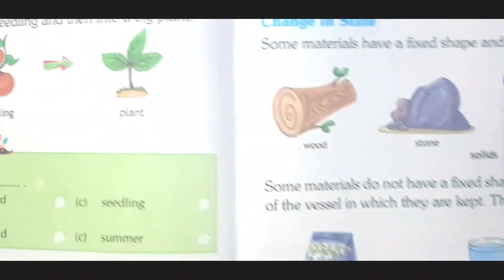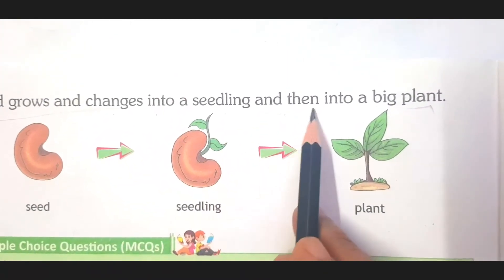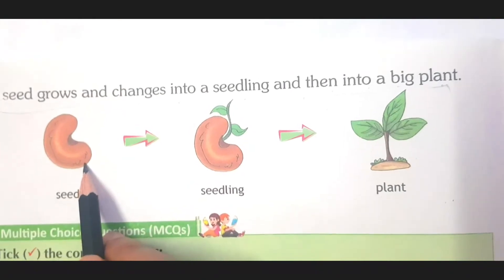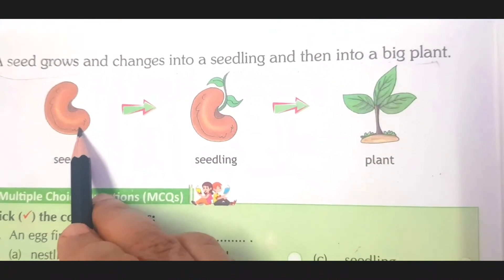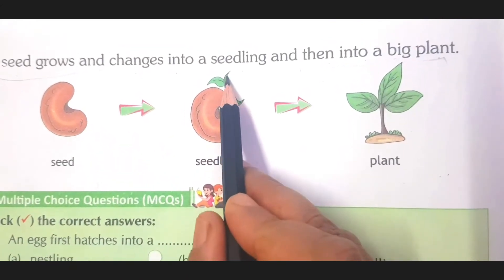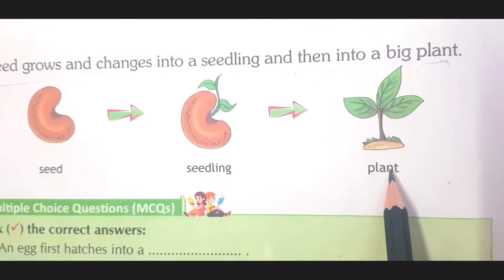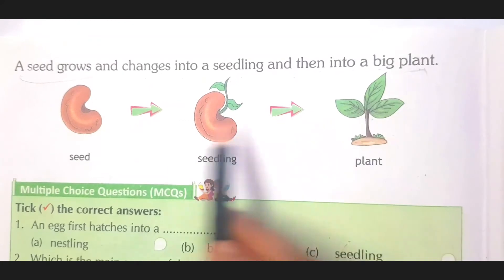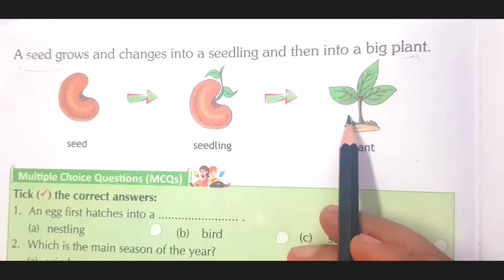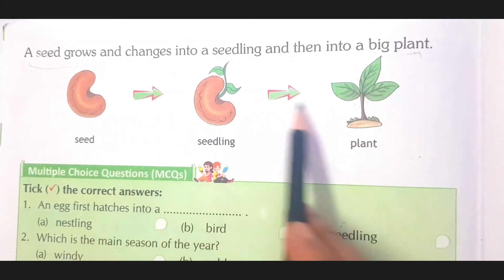A seed grows and changes into a seedling, and then into a big plant. When you sow a seed in the soil and water it, and it gets sunlight and air, it grows into a seedling. A small baby plant is called a seedling, and then this seedling will grow into a big plant. The changes in the process of growing of a plant are also a natural change — not done by humans, it happens naturally.